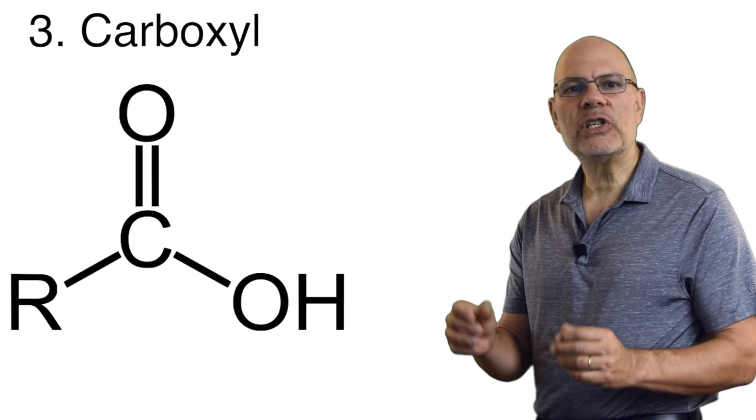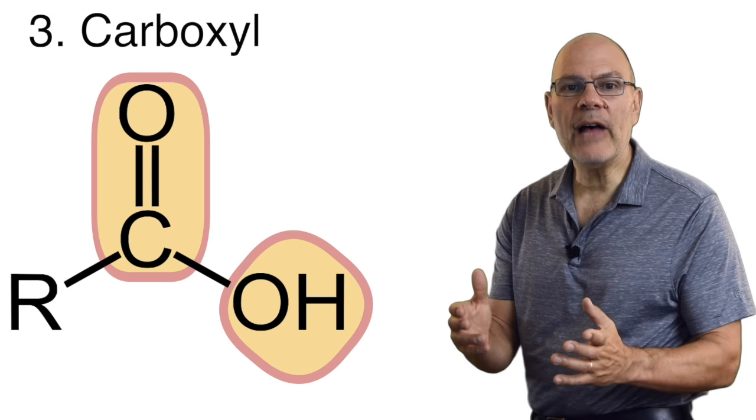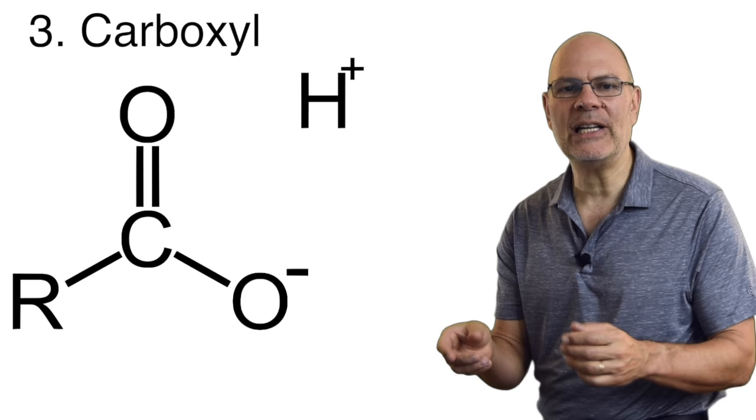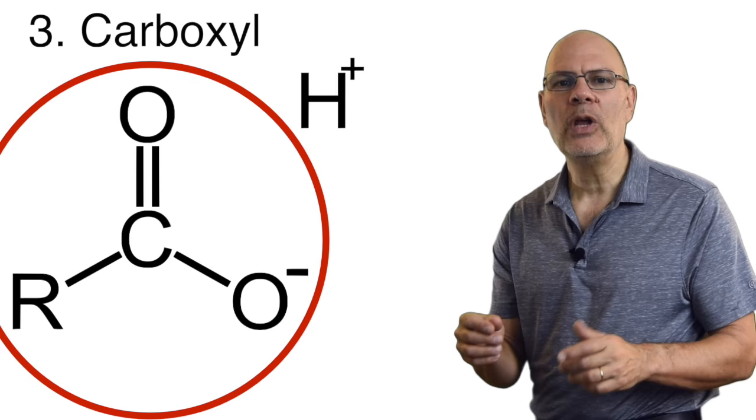This is carboxyl. It's a carbonyl group with a carbon attached to a hydroxyl. When dissolved in water, this hydrogen tends to break off, making a carboxyl group a weak acid and leaving this ionized form of carboxyl behind. That's what you'd find in a cell. You should be able to identify both the non-ionized and the ionized forms.